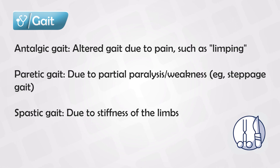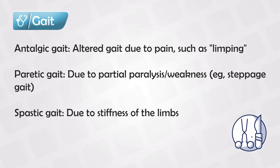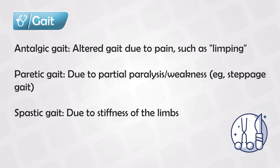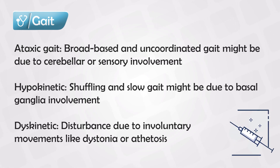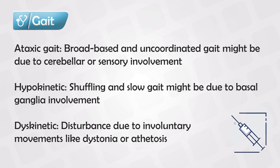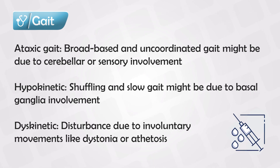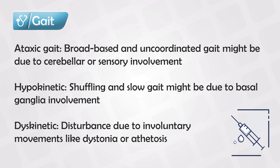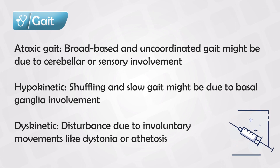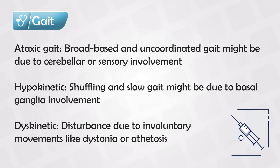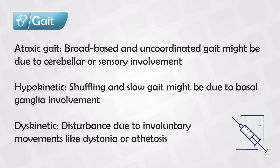Paretic gait occurs due to paralysis or weakness of one side, also known as the stiff gait — the patient basically drags one foot across the floor. Spastic gait is very characteristic: look for stiffness in one limb and it looks like they're moving against resistance. Ataxic gait occurs when there is a cerebellar issue or sensory dysfunction — look for uncoordinated movement and a broad-based stance. Basal ganglia dysfunction causes hypokinetic movement where the patient shuffles or has a slow gait. Dyskinetic gait occurs when the patient has involuntary movements during walking.